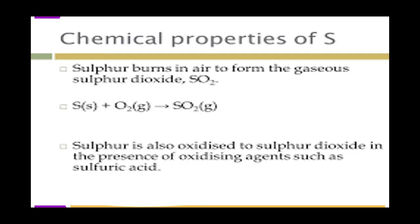On oxidation, sulfur is easily oxidized by both concentrated nitric acid and concentrated sulfuric acid. When warmed with concentrated nitric acid, sulfur is oxidized to sulfuric acid (H₂SO₄). The nitric acid is reduced to red-brown nitrogen dioxide (NO₂) and water.